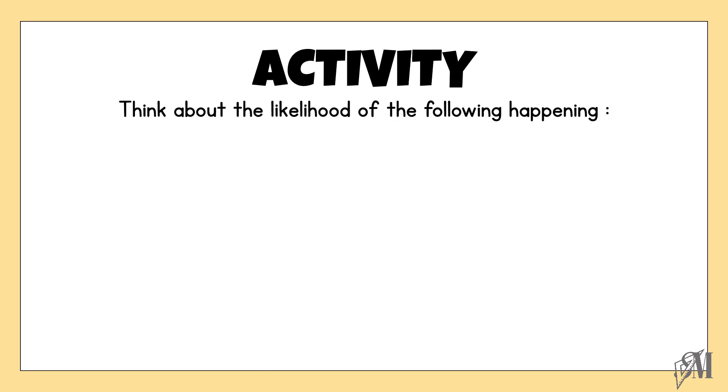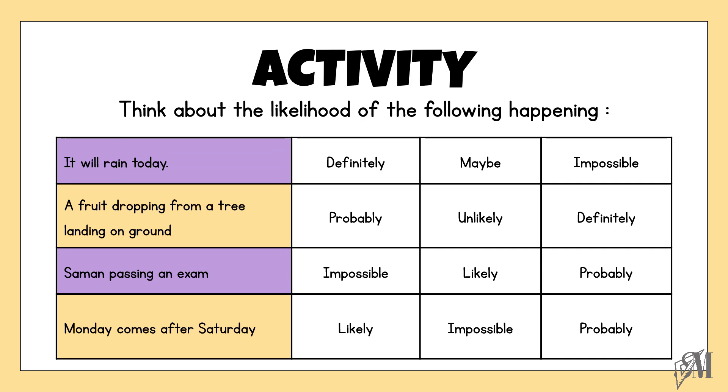Think about the likelihood of the following events. The first event is it will rain today. We don't know whether it will rain or not. It may rain and it may not rain too, so the likelihood is maybe.